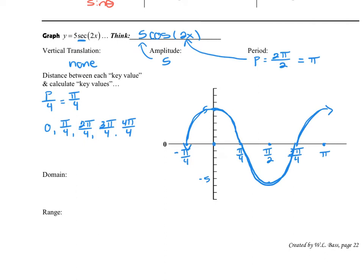To make this into a secant graph, what we're going to find is everywhere this cosine graph crosses that x-axis, that would create an undefined value. So that's going to create a vertical asymptote. So we're going to sketch in those vertical asymptotes anywhere it crosses that x-axis or if it had a vertical shift, a center line.